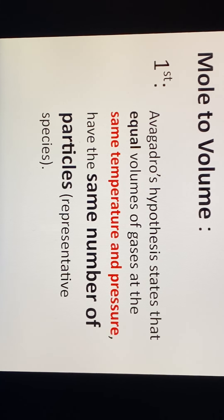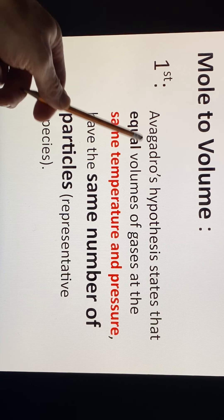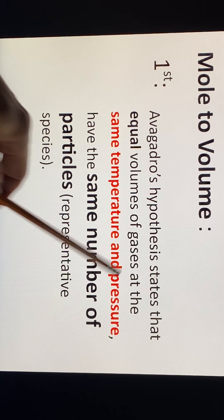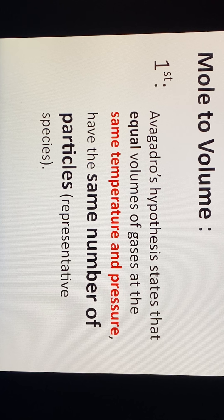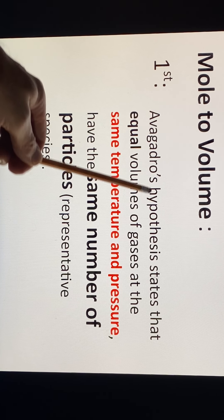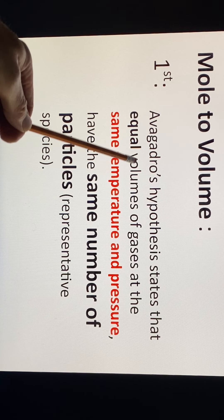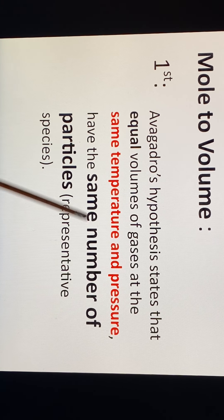We begin with something called Avogadro's hypothesis. Avogadro's hypothesis states that equal volumes of gases at the same temperature and pressure have the same number of particles. Now I mentioned representative species, representative particles — this is terminology we've used in this unit. If you don't remember that terminology, please go back to the first lecture.